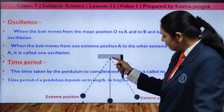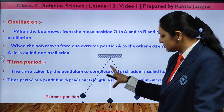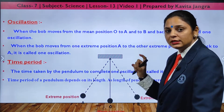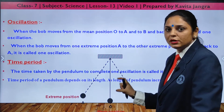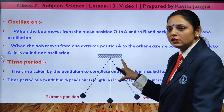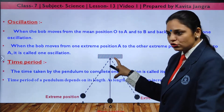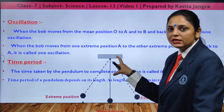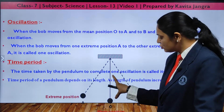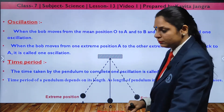If the length of the pendulum increases, the time period also increases. A short thread means less time to complete one oscillation; a longer thread means more time to complete one oscillation.